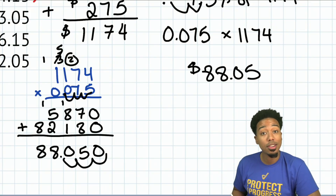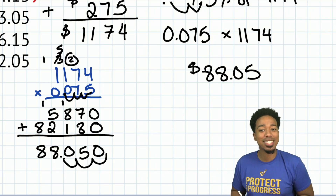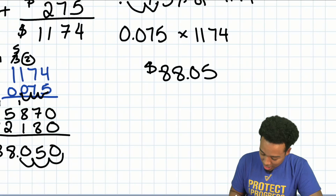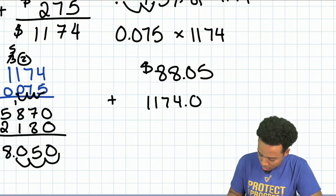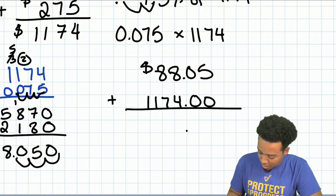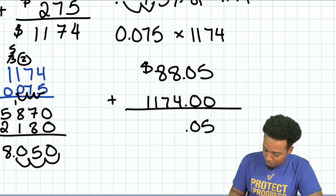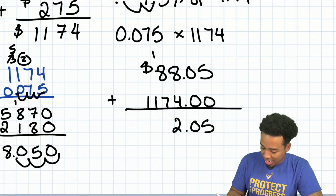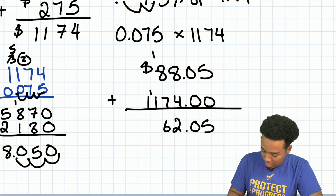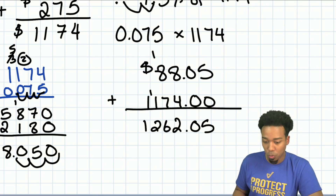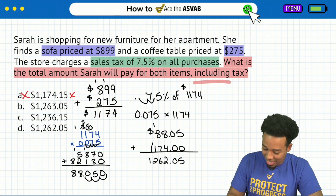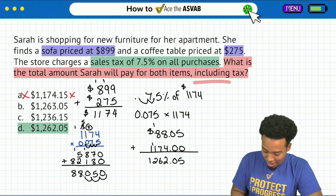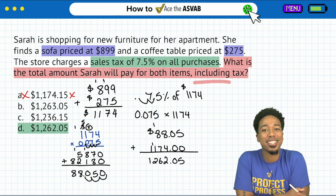Now that we have the tax amount, we're good to go. We add $88.05 back in with the pre-tax total of $1,174. Working through the addition: our final price ends in 5 cents; 8 plus 4 is 12; 8 plus 7 is 15, carry 1 is 16; giving us $1,262.05. That makes the correct answer choice D.